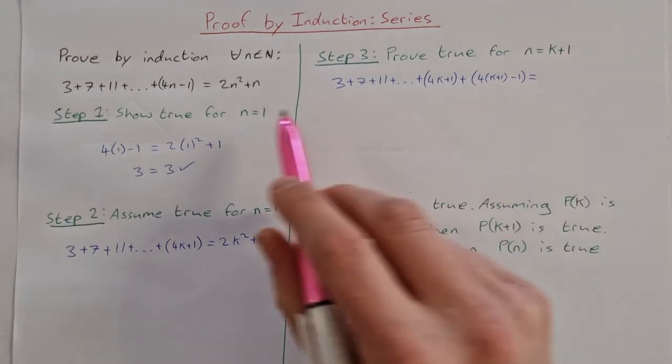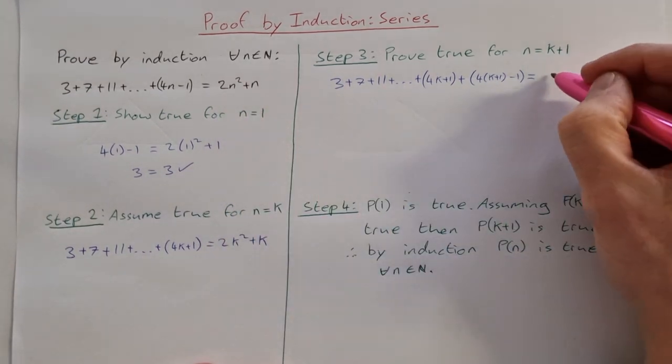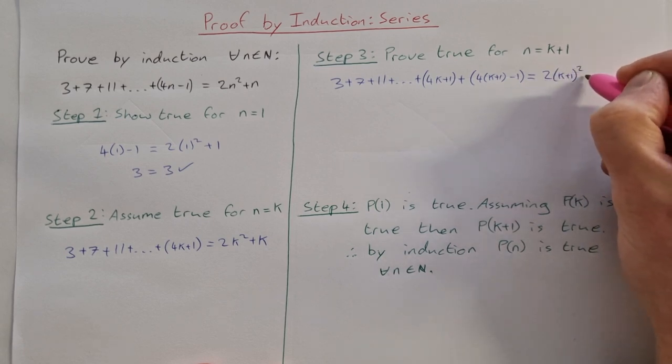That's the left hand side, and on the right hand side we're putting in k plus 1 instead of n here, so that would be 2 times (k plus 1) squared plus (k plus 1).